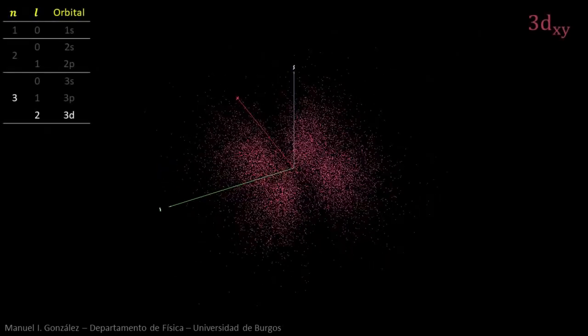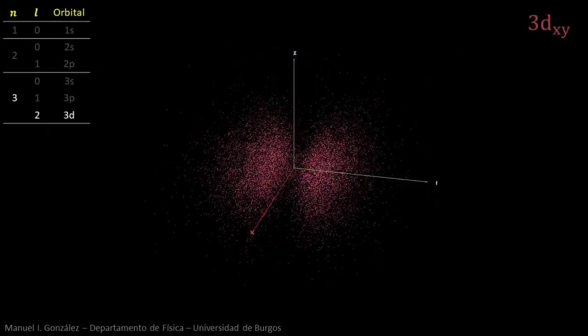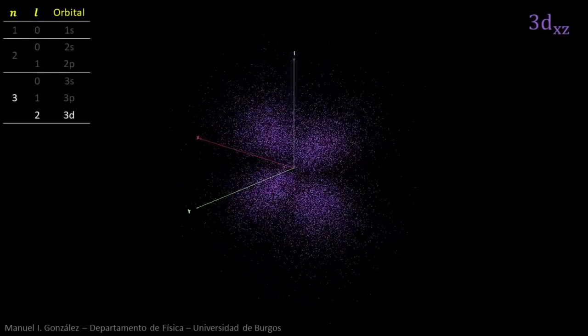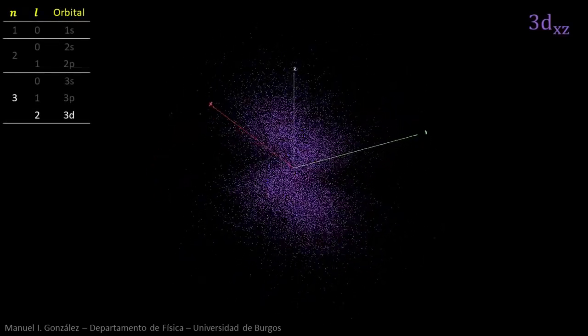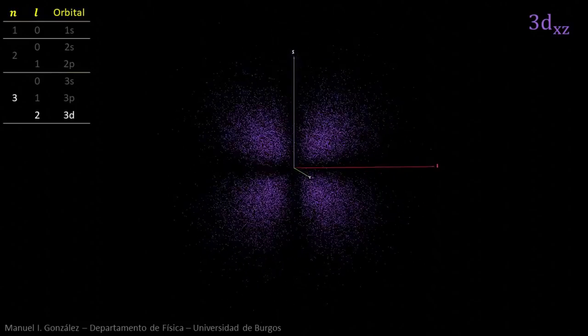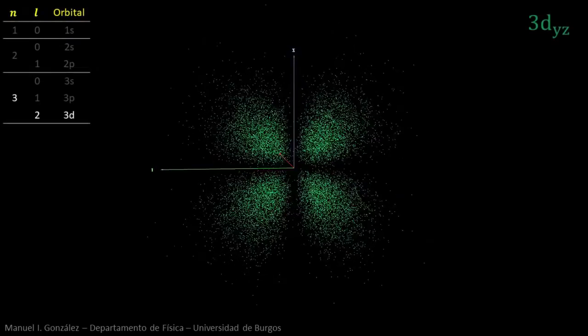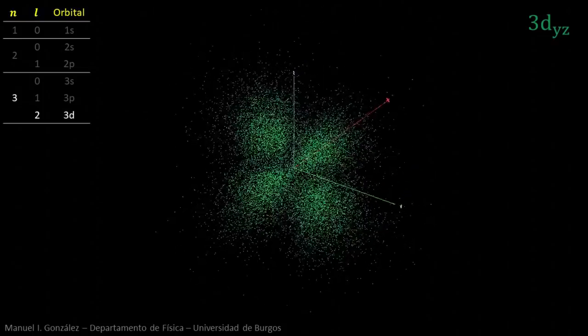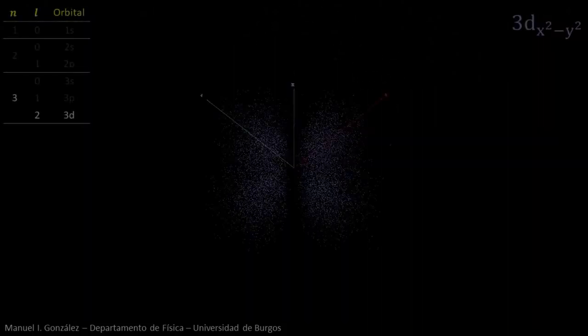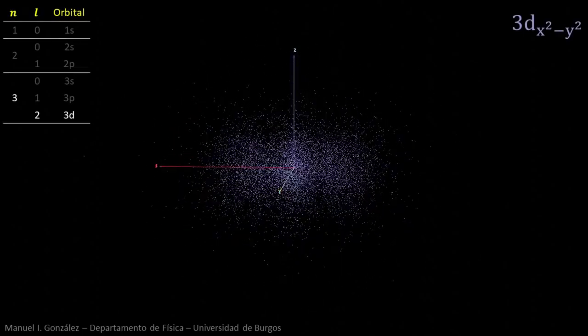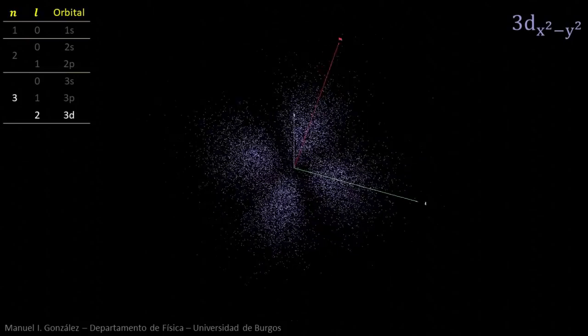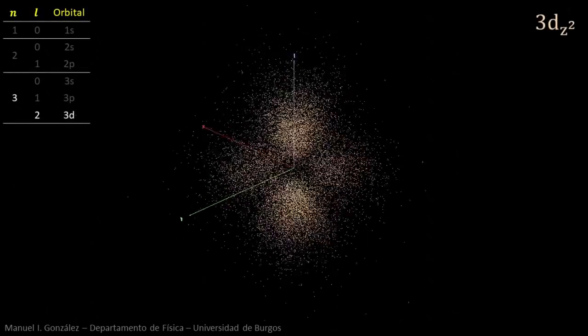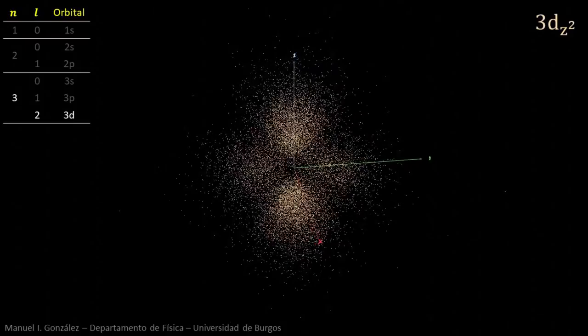There are several ways to choose the five 3d orbitals. This is the most popular one. Three of them have four lobes bisecting the coordinate axes. The fourth one has four lobes along X and Y axis. Finally, the fifth one has two lobes along Z axis and a ring-shaped region on the XY plane.